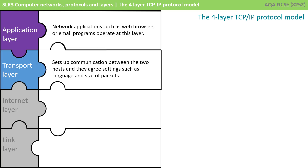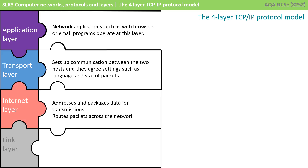The information then gets passed down to the transport layer. This layer is responsible for setting up communication between the two hosts, and they agree on settings such as the language and the size of various packets. This then gets passed down to the next layer, which is known as the internet layer, where we address the packets and data for transmission and route the packets across the network.